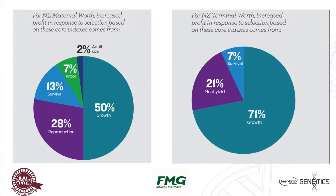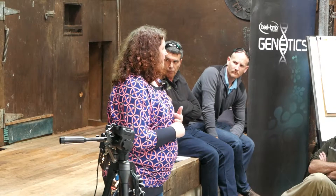Switching to the terminal side: so much of the value we're going to get out is around growth, so 71% is going to be in response to the growth of the lamb. 21% is put on meat yield — the fleshiness of that animal for a given carcass weight; the extra flesh per amount of bone for its size. We still need that lamb to get up and live, so survival is still in there. We know that if we ignored survival and went hard on growth in other traits, we would start to slip back on survival, and we can't have that.